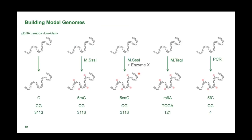We start by making model genomes, introducing specific modifications — in this case, methylcytosine and formal cytosine, which we are very interested in for its behavior in certain cell types and during cell differentiation. We always run a negative control with no modification, and we also sequence DNA containing m6A as a positive control, since it gives a very strong signal on both Nanopore and PacBio platforms.